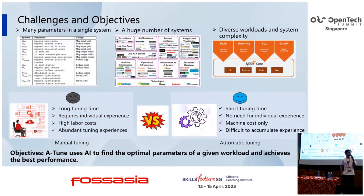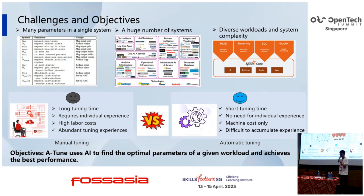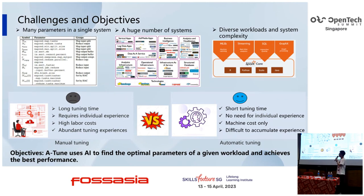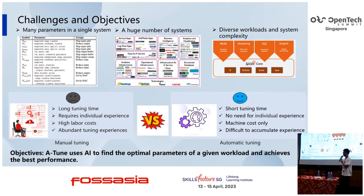However, tuning these parameters has several challenges. The first is that there are many parameters in a single system — for example, in Spark there are more than 200 parameters. The second is that there are a huge number of systems, including vertical applications, analytics, and visualization systems. Different systems need different kinds of parameters.